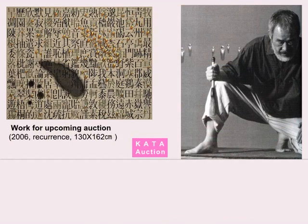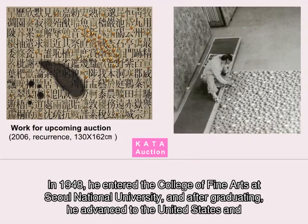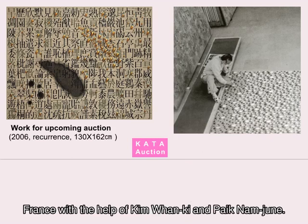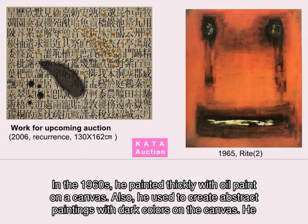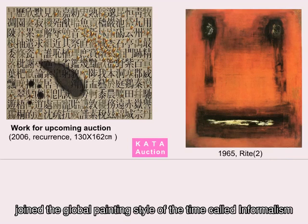Born in 1929 in Korea, painter Kim Chang-yul learned calligraphy from his grandfather as a child. In 1948, he entered the College of Fine Arts at Seoul National University, and after graduating, he advanced to the United States and France with the help of Kim Wan-ki and Paik Nam-joon. In the 1960s, he painted thickly with oil paint on a canvas and created abstract paintings with dark colours, joining the global painting style of the time called Informalism.